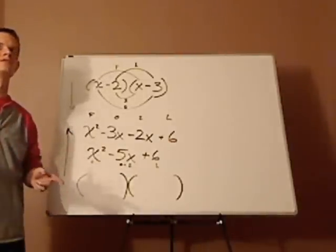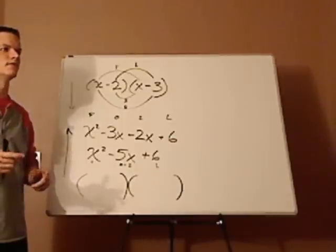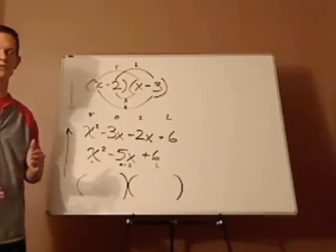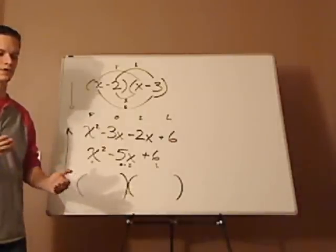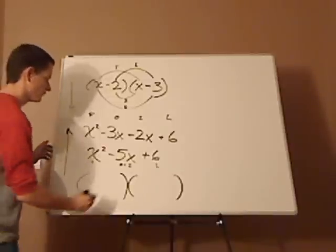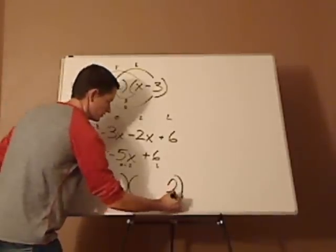So I have 6 times 1, and I have 3 times 2. And I'm looking for a sum that will give me 5. 2 plus 3 gives me 5. So this would be 3, and this would be 2.